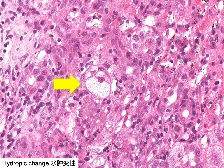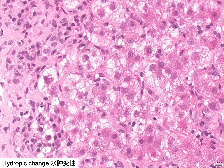This is an example of a hepatocyte with hydropic change in a patient with autoimmune hepatitis. Another example shows hepatocytes with hydropic change in a patient with severe autoimmune hepatitis. Morphologically, these swollen hepatocytes could be sometimes indistinguishable from ballooned hepatocytes.